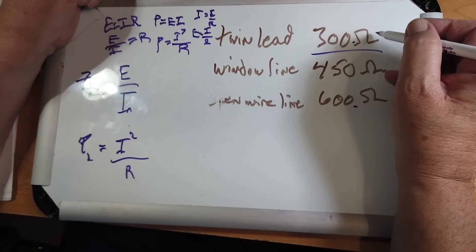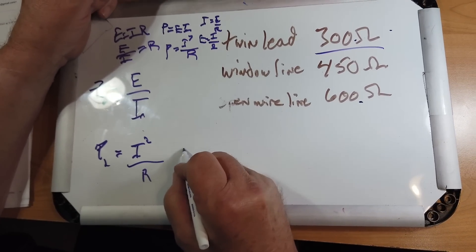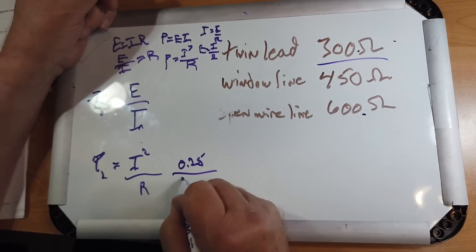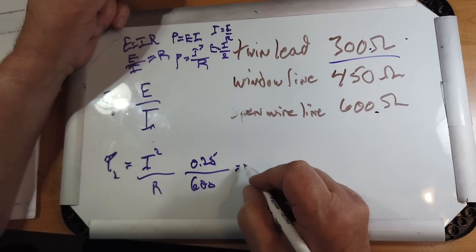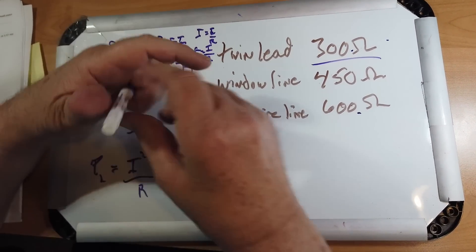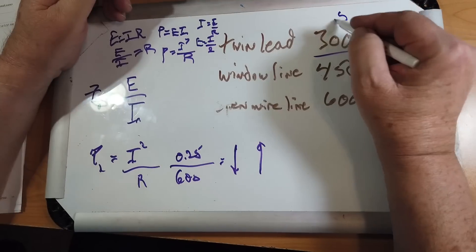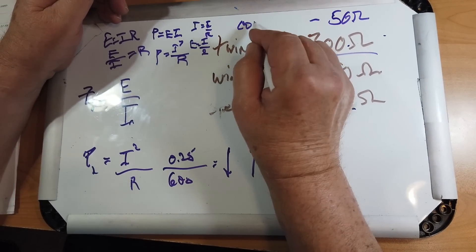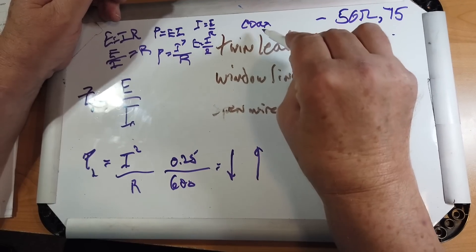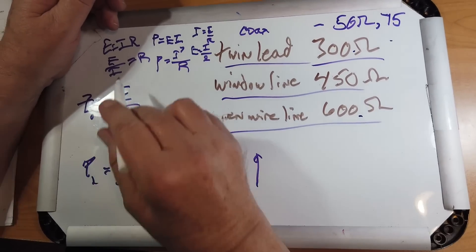Now, we note that we've got half the current here that we do here. So that goes down by half. You square it, it goes down by a quarter. So it's 0.25 times what it would be here. And then the R goes up to 600. The power loss goes way down as the impedance goes up. So this is the reason for higher impedance lines - there's less power lost. Coax is a crummy 50 ohms. And the point being that these lines lose much less power in going to the antenna.